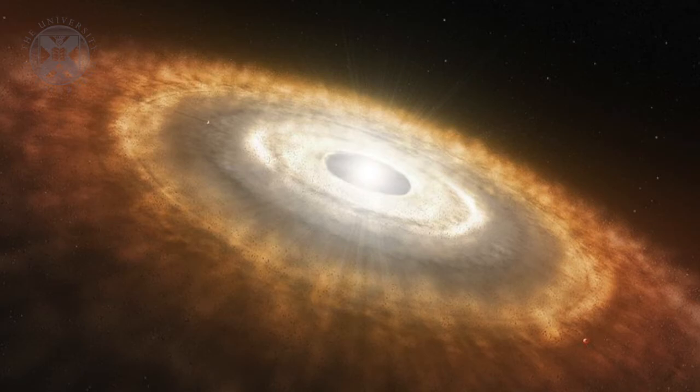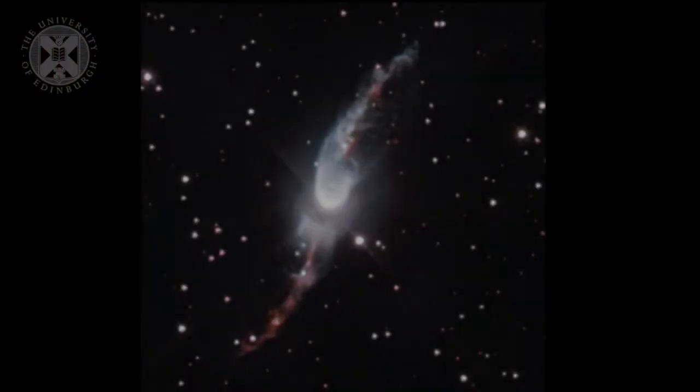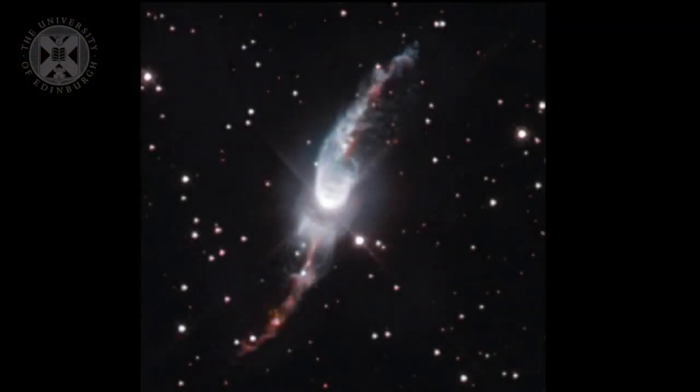Structures begin to form in these nebula. For example, this is a bipolar outflow and what's happening here is the material is collapsing into the protostar and the new solar wind that's being generated by this early star is pushing the material out and forming these outflows around the nebula.